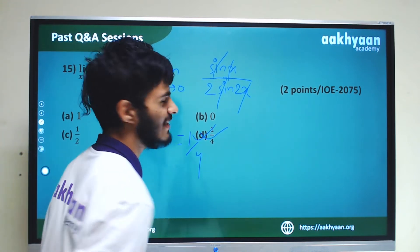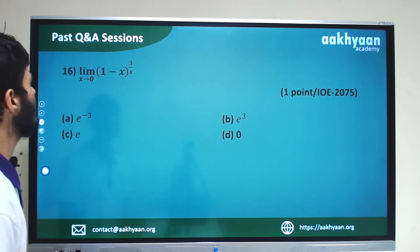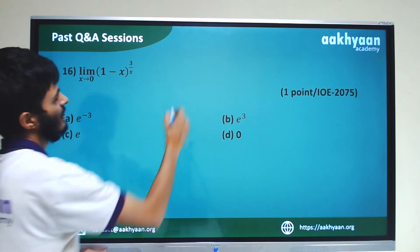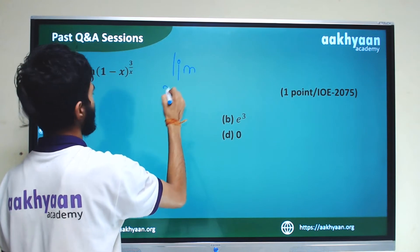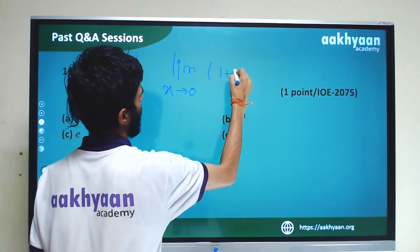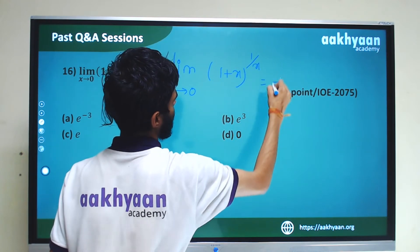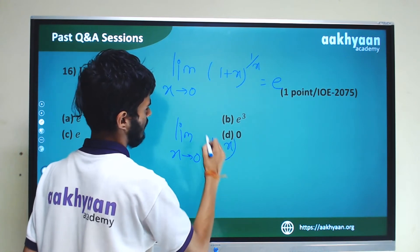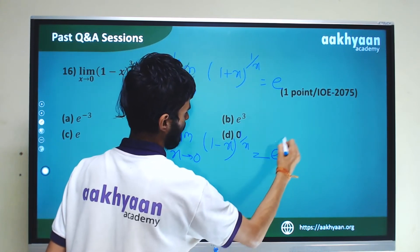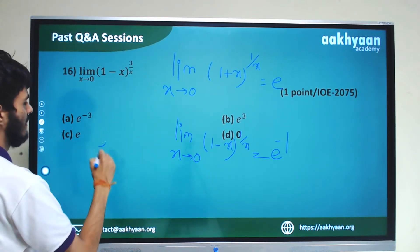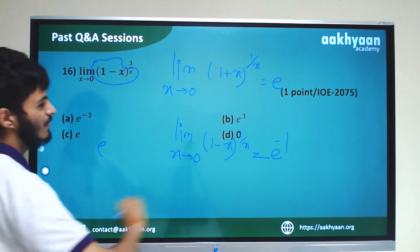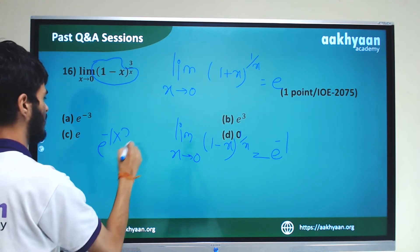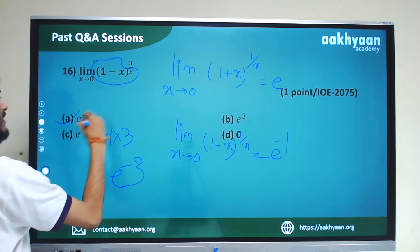So these are the correct options. In the next problem, we are given limit x tends to 0 of (1 minus x) to the power 3 by x. We use the basic theorem: limit x tends to 0 of (1 plus x) to the power 1 by x equals e. So limit x tends to 0 of (1 minus x) to the power 1 by x equals e to the power minus 1, giving e to the power minus 3. So these are the correct terms.